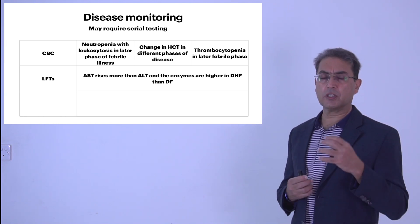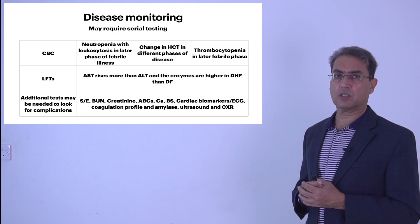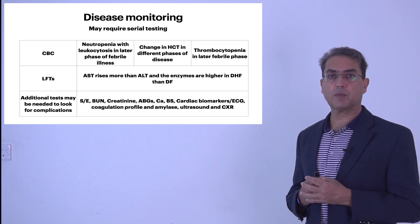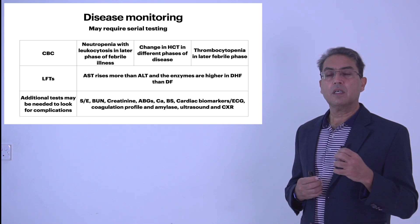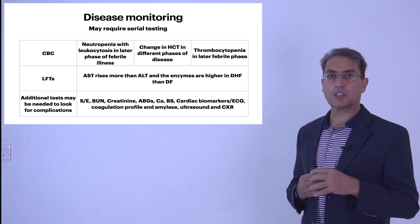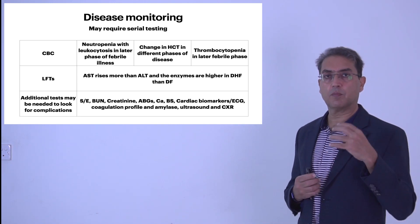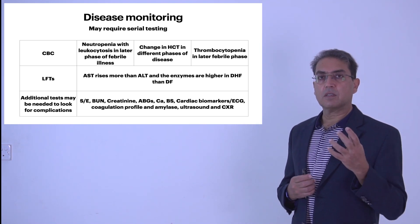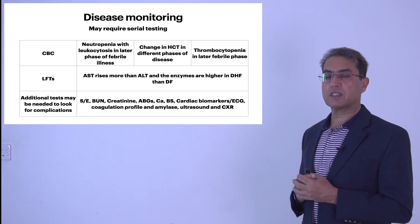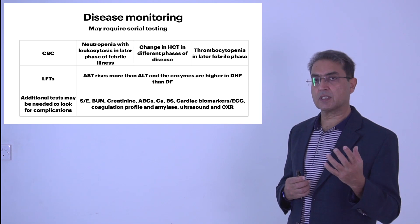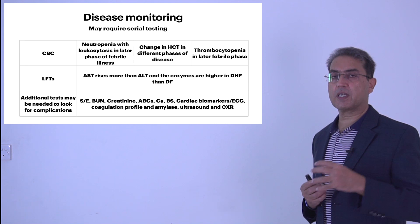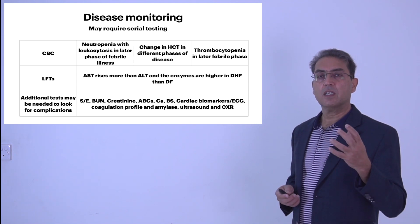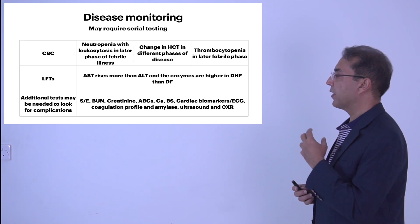In sicker patients, additional tests are needed: serum electrolytes, renal function tests including blood urea nitrogen and creatinine, arterial blood gas for metabolic acidosis, calcium, blood sugar, cardiac enzymes, ECG, coagulation profile, amylase, abdominal and chest ultrasound, and possibly chest X-ray. The lateral decubitus chest X-ray helps detect pleural effusion in the leakage phase, but bedside ultrasound is often preferable as it can detect pleural and peritoneal fluid accumulation without moving the patient.